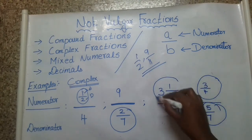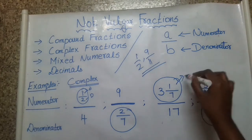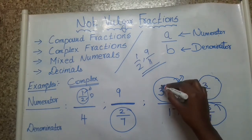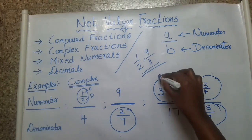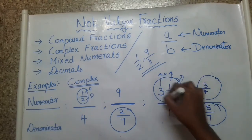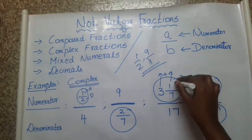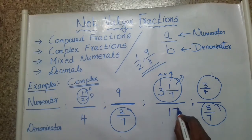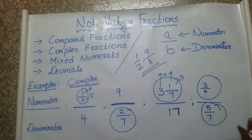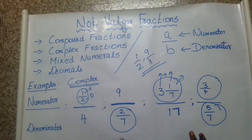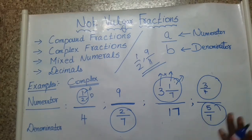A mixed numeral is already a mix of a whole number plus a fraction. So in this case, if a mixed numeral is divided by one number — an integer — then in this way it will not fall under a vulgar fraction.